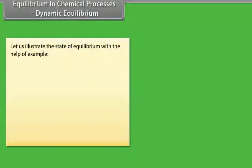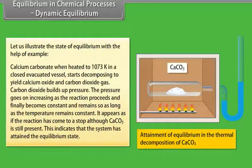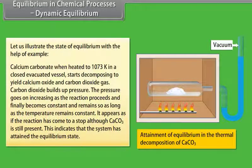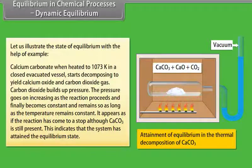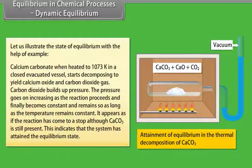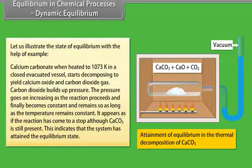To illustrate the state of equilibrium: calcium carbonate, when heated to 1073 Kelvin in a closed evacuated vessel, starts decomposing to yield calcium oxide and carbon dioxide gas. The CO₂ builds up pressure that goes on increasing as the reaction proceeds and finally becomes constant as long as the temperature remains constant. It appears as if the reaction has stopped, although CaCO₃ is still present — this indicates the system has attained equilibrium.